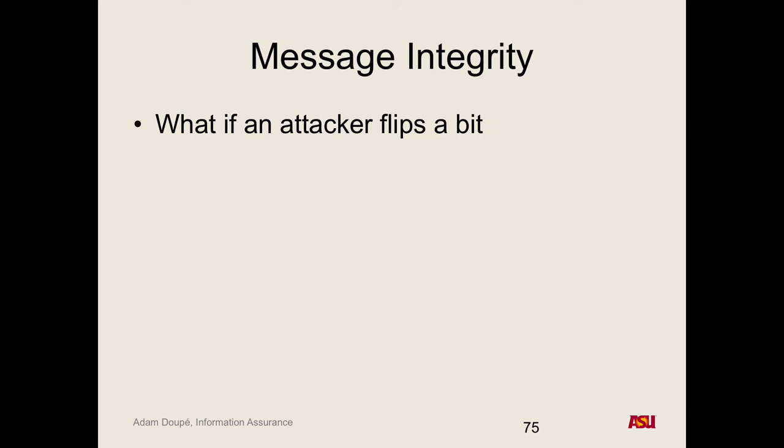An attacker could flip a bit in the ciphertext before sending it. In CBC mode, if you flip a bit in the middle of the ciphertext, the beginning decrypts fine but you get random errors at the flip point. CBC has an interesting property where it self-heals and returns to normal — so those garbled sections may contain important data, and you have no way of knowing if the original document was corrupted or intentionally tampered with.